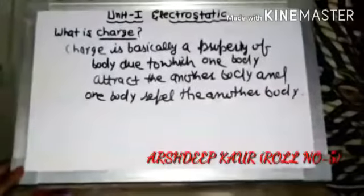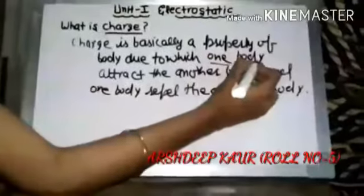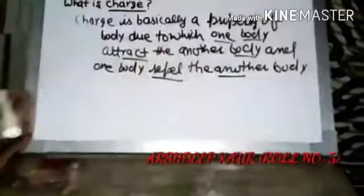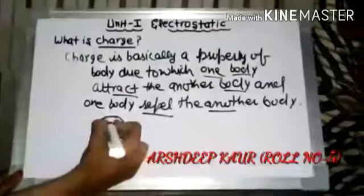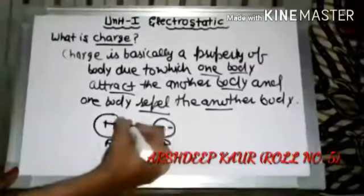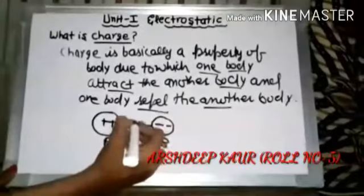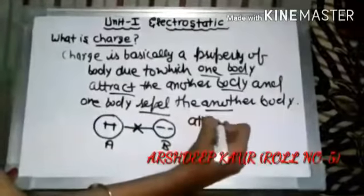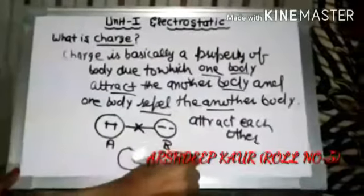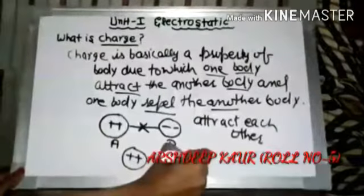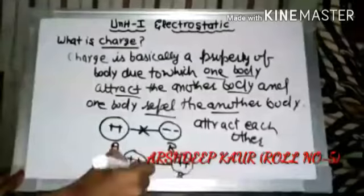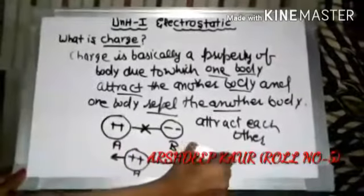Charge ik aihi property hai jide rahi jaana da, ek body dooji body nu attract kar diyan jaana, ek body dooji body nu repel kar diyan. Maano apne kol do positive charge hai aur do negative charge hai — ah opposite charge hai, tah ek dooji nu attract karengi. Aur apne kol positive charge hai aur udhar bhi positive charge hai, tah body A, body B toh pare jawegi aur body B, body A toh pare jawegi — repel each other.